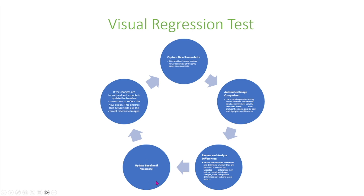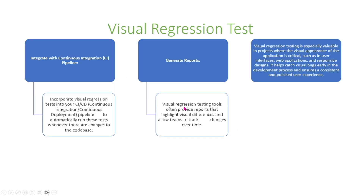Then we update the baseline if necessary. If the changes are intentional and expected, we update the baseline screenshots to reflect the new design, ensuring that future tests use the correct reference image. You can also integrate visual regression tests into your continuous integration or continuous deployment pipelines to automatically run these tests whenever there are changes to the code base. Visual testing tools often provide reports that highlight visual differences and allow teams to track changes over time. Visual regression testing is especially valuable in projects where visual appearance is critical, such as user interfaces, web applications, and responsive designs. It helps catch visual bugs early and ensures a consistent and polished user experience.